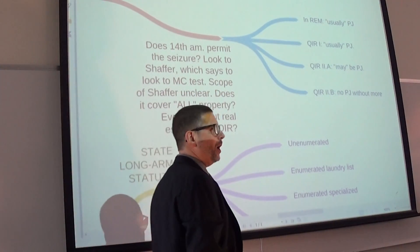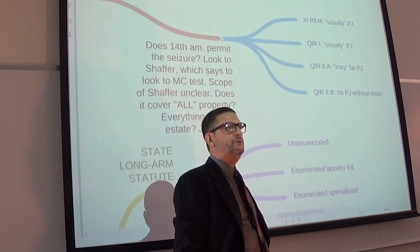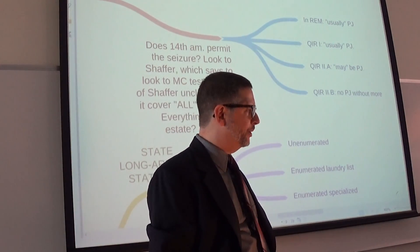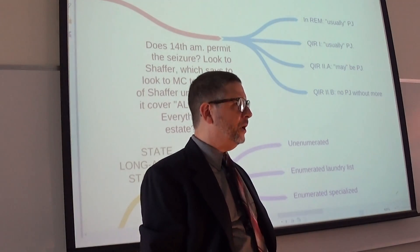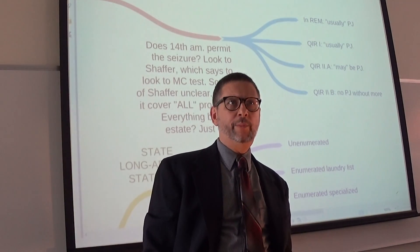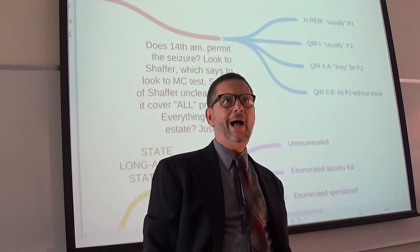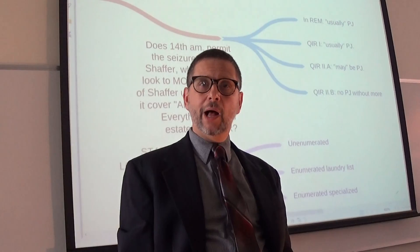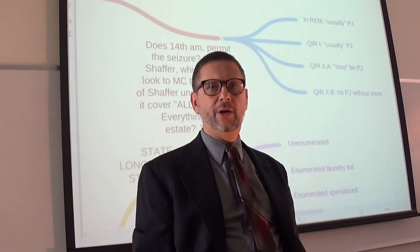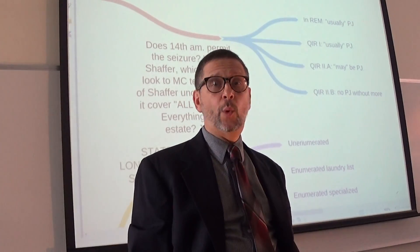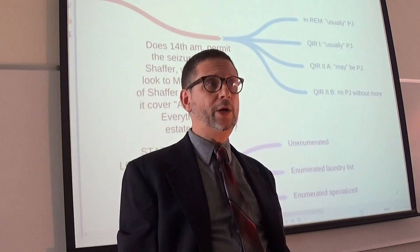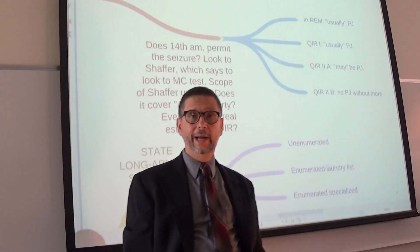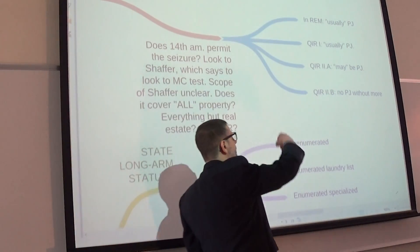He also talked about a quasi in rem type 1 proceeding, which is when the property is within the state and is the subject matter of the lawsuit, but the only litigants being bound would be the plaintiff and the defendant. Again, he said that would usually be the case. Think, for example, of a suit between a seller of a house and a buyer of a house, where the seller doesn't want to close on the property but the buyer wants to enforce the sales agreement — that would be a quasi in rem type 1, and Marshall says usually there's going to be personal jurisdiction.